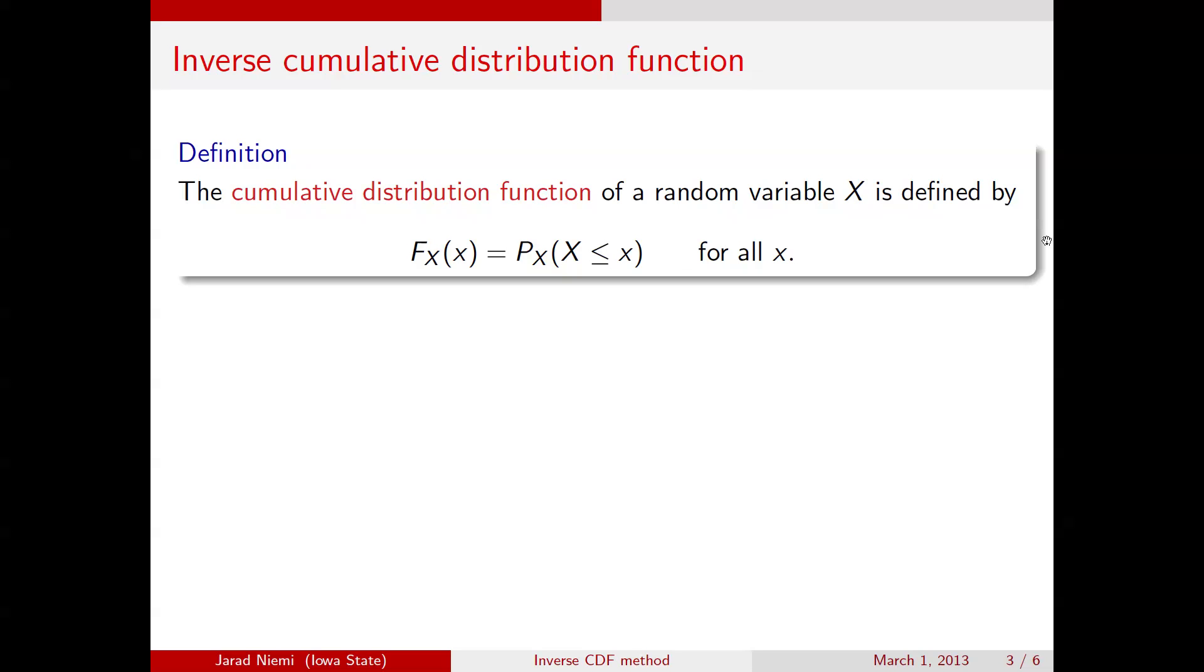So as an example here, if x has an exponential 1 distribution, then the cumulative distribution function F of x is the integral over the probability density function evaluated at 0 up to x. 0 here because the support for an exponential is 0 to infinity. We evaluate that, and we have this function right here. So this is the cumulative distribution function for an exponential 1.